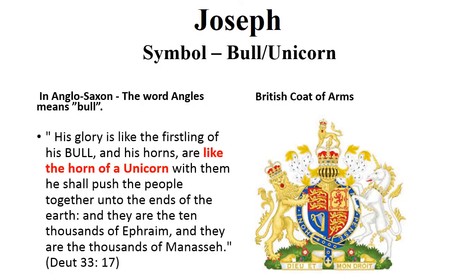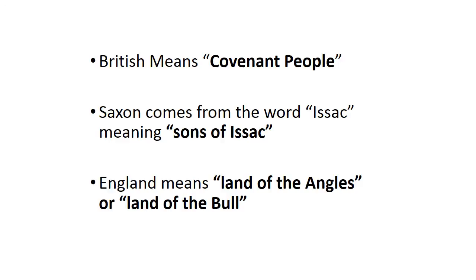Joseph would be made up of two tribes, Ephraim and Manasseh, and they would move into the area of Britain as the Anglo-Saxon tribes. The word 'Angles' in Hebrew means bull. Deuteronomy 33:17 says: 'His glory is like the firstling of a bull, and his horns are like the horns of a unicorn.' If you look at the British coat of arms, you see a unicorn on it, and also a lion representing the royal house of Judah. The word 'British' means covenant people — 'ish' means people and 'brit' means covenant. Saxon comes from the word Isaac, meaning sons of Isaac. England comes from land of the Angles, or land of the bull.